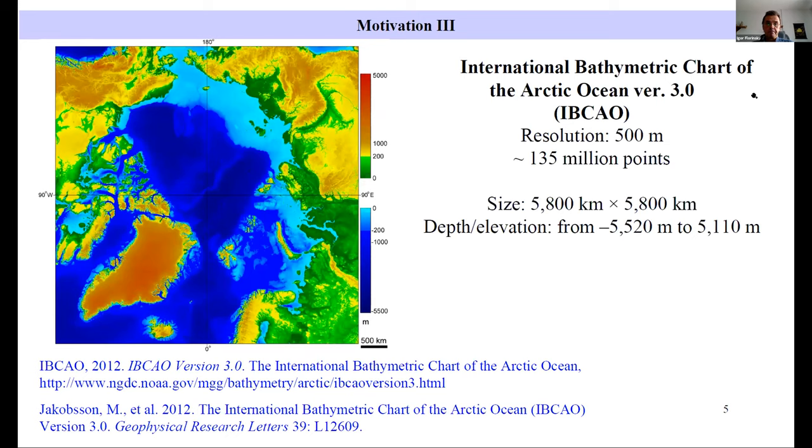Third motivation: availability of data. In particular, there is an International Bathymetric Chart of the Arctic Ocean version 3 and now version 4. IBCAO is a DEM of mixed type. It includes depth for the Arctic Ocean and some portions of the Atlantic Ocean and Pacific, and elevations for surrounding landmass areas of Eurasia and North America.